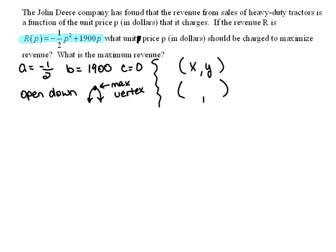Instead of where we normally see X, we see P, and our Y here is taken over by an R. So that tells us that our points are going to come in the form of price, comma, revenue. So when we find the maximum, we're finding the maximum price and the maximum revenue.